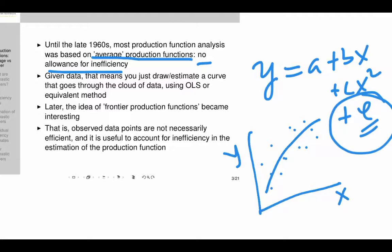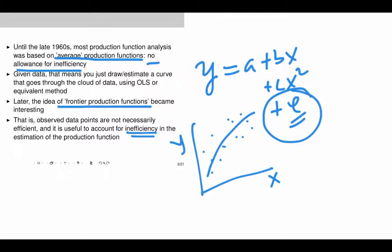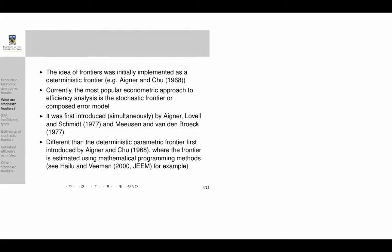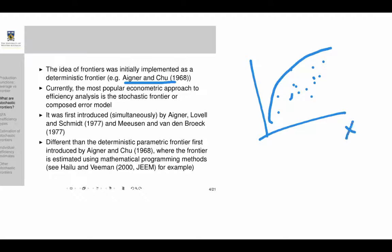Later, in the late 1960s, there was the idea of the frontier production function. It was recognized that observed data points are not necessarily efficient, and it's useful to account for inefficiency in production function estimation. The idea of a frontier was implemented by Aigner and Chu, who came up with a production function that enveloped all the data — going over or above the data, unlike the average production function. All data points were either efficient or inefficient depending on whether they were on the curve or below it.